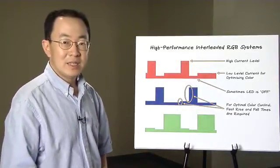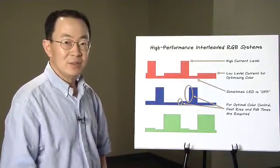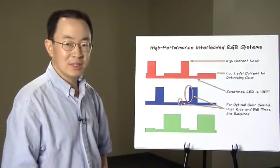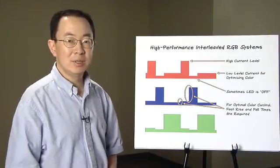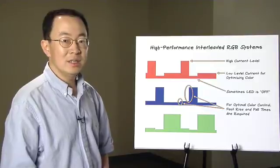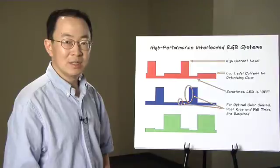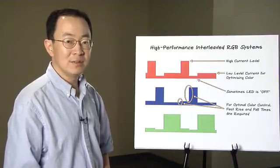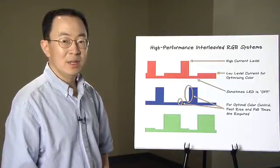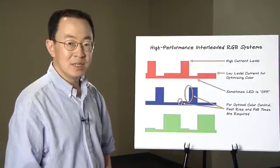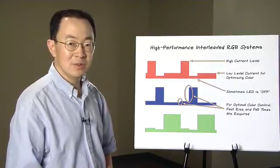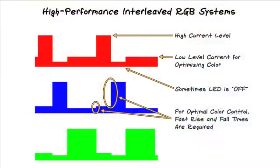One of the application examples of the LT3743 is DLP projector. In a standard DLP projector, a standard interleaved RGB system is used. But in a high-performance projector, a high-performance interleaved RGB system is used. The differences between a standard system and a high-performance system are number one.